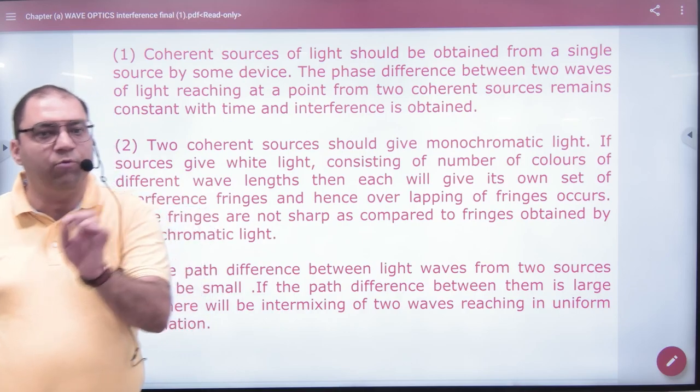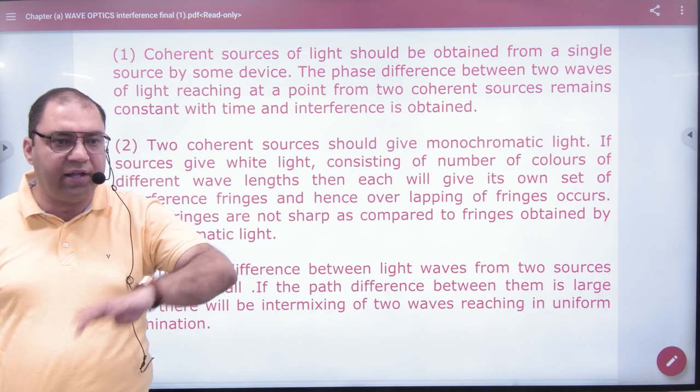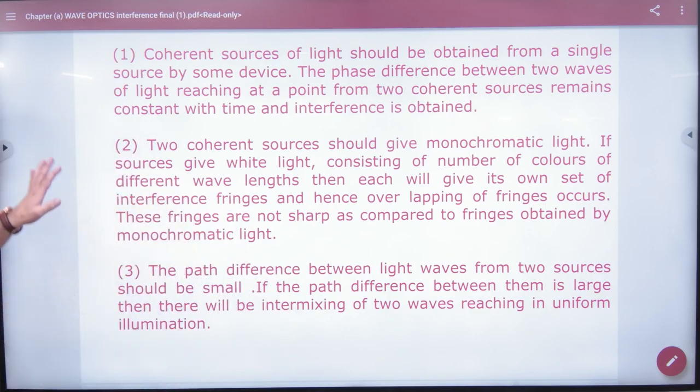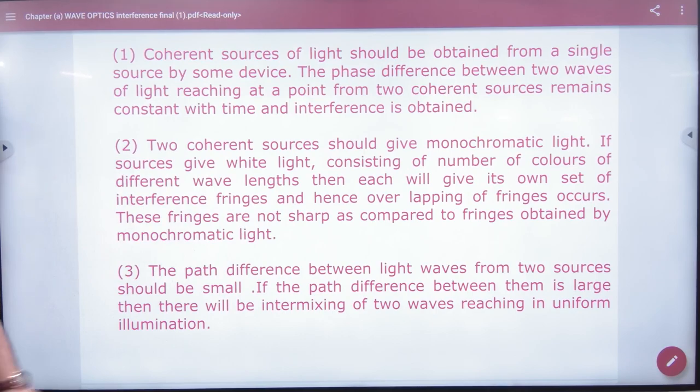CBSE people ask, why do they not use white light in YDSE? Because it has 7 wavelengths interfering with the other 7 wavelengths, so you will see an overlapping pattern of fringes, so the darkness will not be seen.